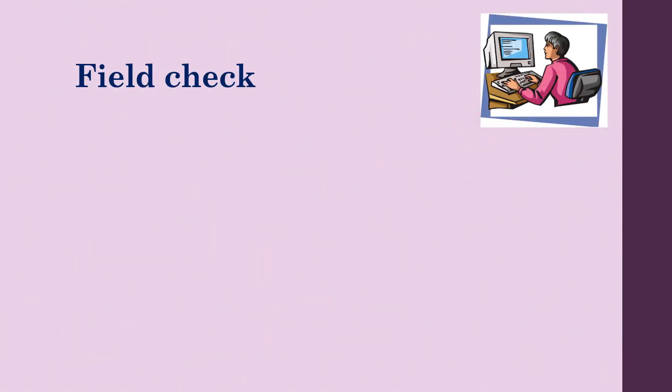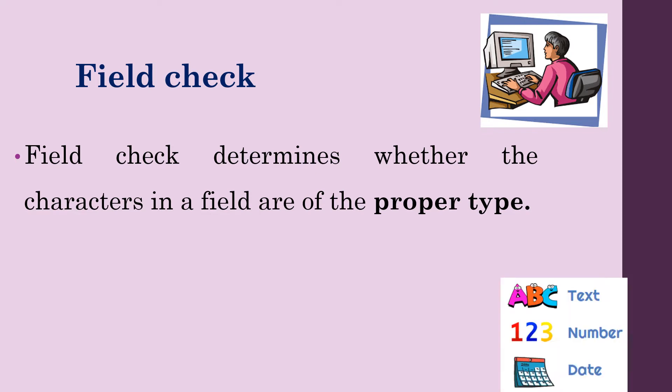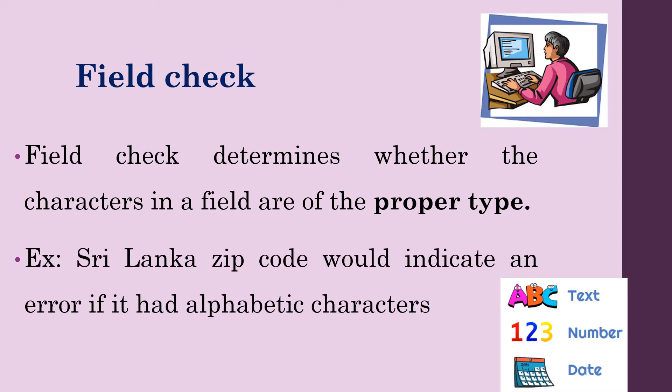Field check determines whether the characters in a field are of the proper type — it can be text, number, or date, etc. For example, Sri Lanka's zip code would indicate an error if it contained alphabetic characters, since we all know that zip codes contain only numerical characters.